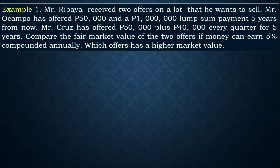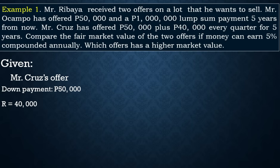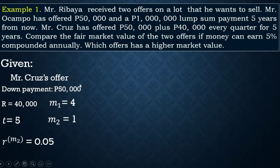Now for Mr. Cruz's offer: he offered 50,000 plus 40,000 every quarter for five years. This is an example of a general ordinary annuity. The given values are: down payment of 50,000, regular payment of 40,000 every three months, term of five years. Here, m₁ = 4 (quarterly) and m₂ = 1 (compounded annually). The rate r = 0.05, and n = m₁ × t = 4 × 5 = 20.